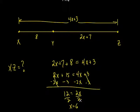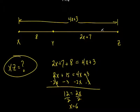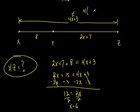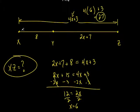Is X equals 6 my answer? Do I circle it? No, because they ask for XZ — so you've got to plug it in. X is 6, so plug it into 4X plus 3 for the whole entire thing. So it's 4 times 6 plus 3 — that's 24 plus 3, which is 27. The whole length of that thing is 27. The answer is 27 because it says find the length of XZ.